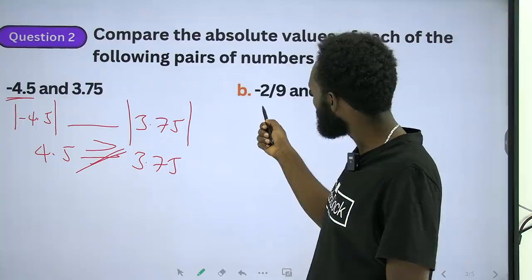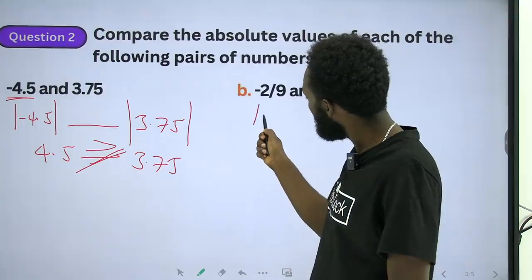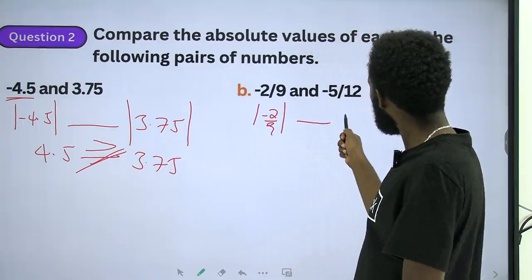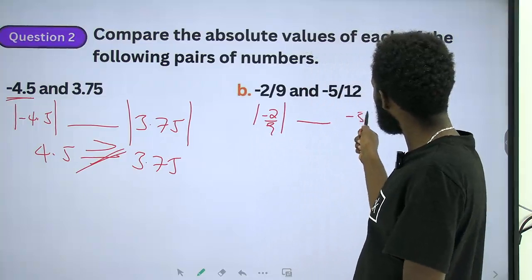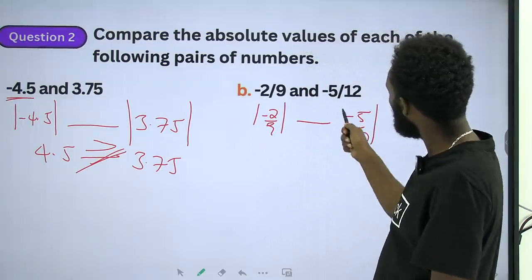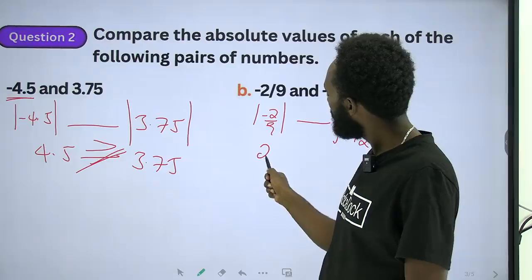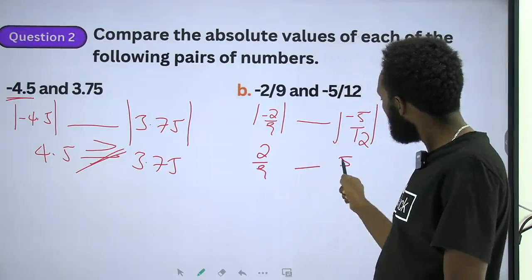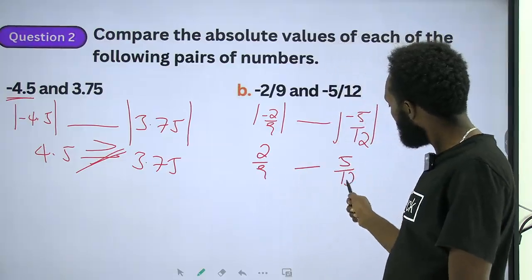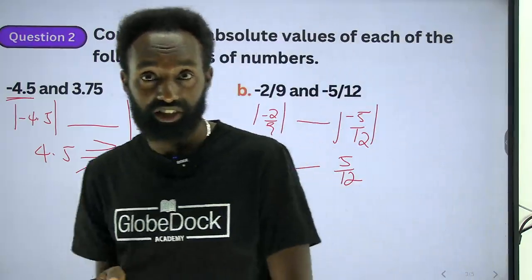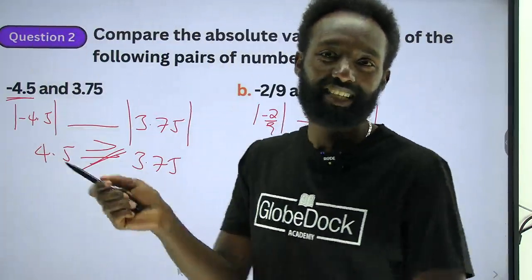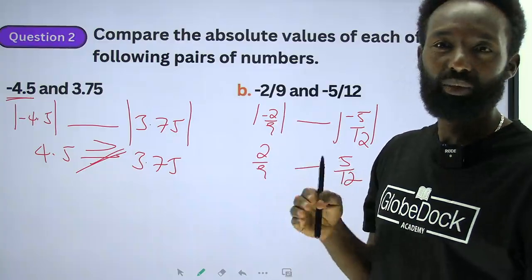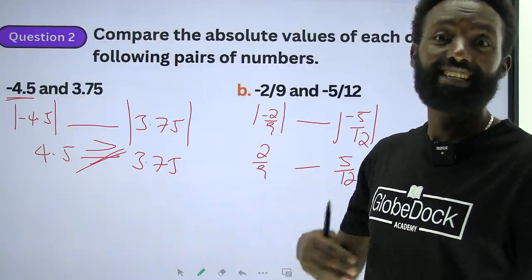Now we have to compare: absolute value of minus 2 over 9 versus absolute value of minus 5 over 12. We need to compare these two fractions and determine which is greater. We have to use a fraction comparison technique.